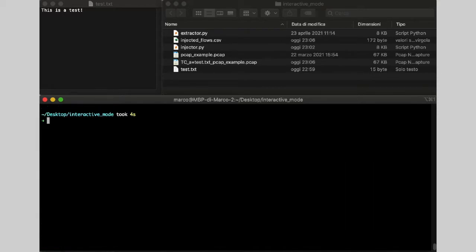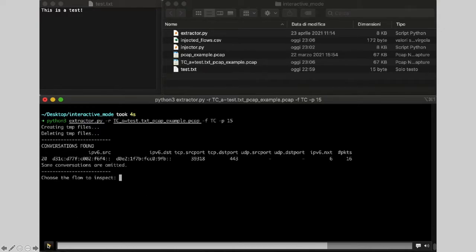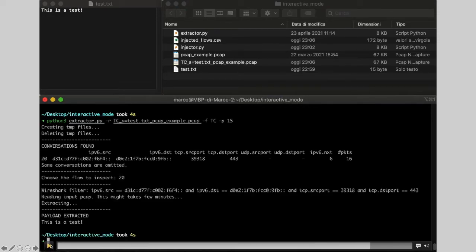We also developed the extractor, as I said earlier. So, in this case, the user reads the output pcap, selects the field that he wants to extract and specifies the number of packets to inspect. Also, in this case, some conversations are found. And once the user selects the conversation that he wants to extract,